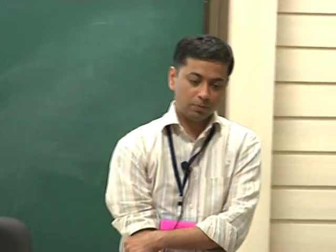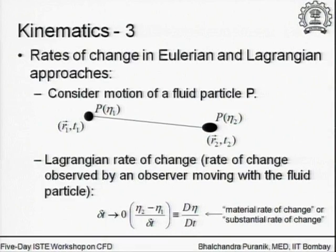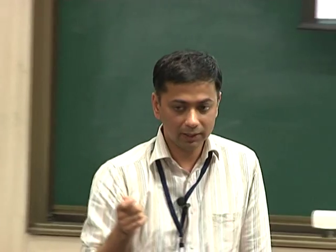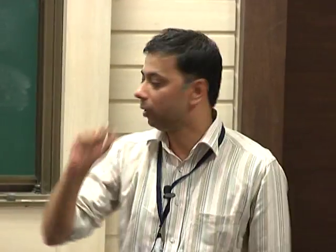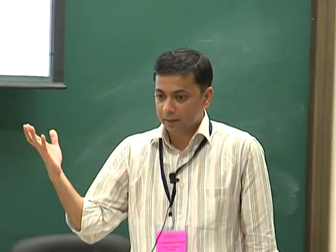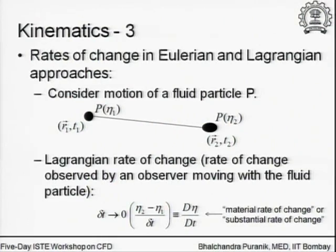Capital D/Dt of eta is called the substantial or material rate of change. This is formally the same as what you know from solid body dynamics — when you write F = ma for a rigid particle, that acceleration is the rate of change of velocity, which is actually the Lagrangian rate of change. Since the Lagrangian approach is exactly the same as rigid body dynamics, the rate of change in the Lagrangian approach is capital D/Dt.